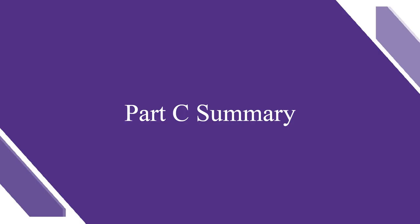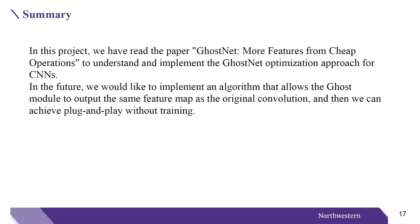In summary, in this project we read the paper 'GhostNet: More Features from Cheap Operations' to understand and implement the GhostNet optimization approach for CNNs. By comparing the experimental results, the addition of GhostNet has less impact on accuracy while optimizing the operations. We know that the primary CONV in the ghost module is exactly the same as the original convolution, but the cheap CONV changes half of the feature map through channel-by-channel convolution. In the future, we would like to implement an algorithm that allows the ghost module to output the same feature map as the original convolution, achieving plug-and-play without training.